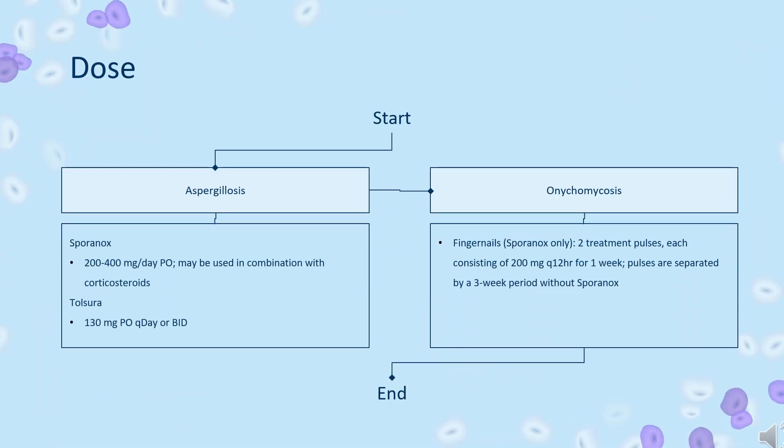Dose — Aspergillosis: Indicated for treatment of pulmonary and extrapulmonary aspergillosis in immunocompromised and non-immunocompromised adults who are intolerant of or refractory to amphotericin B therapy. Sporanox: 200–400 mg per day orally, used in combination with corticosteroids.